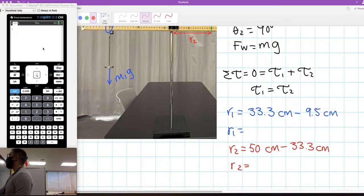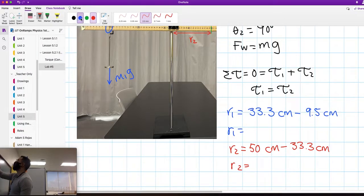Now let's get those distances. R1 is 33.3 minus 9.5, which equals 23.8. That'll be distance 1. Distance 2 will be 50 minus 33.3, which equals 16.7. So we have 23.8 centimeters and 16.7 centimeters.